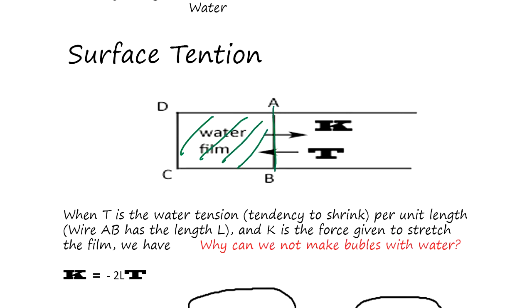Surface tension pulls inward, but you push this out, so we can measure the surface tension easily. You know why we cannot make a bubble with water, right? Because we inject the gas - surface tension too strong, it bursts.